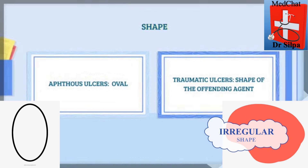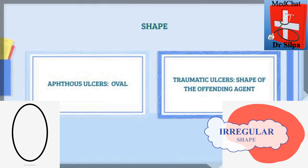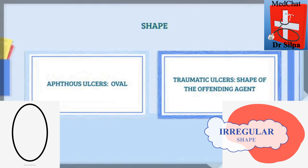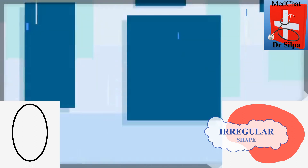Aphthous ulcers are oval or round in shape, whereas traumatic ulcers tend to take the shape of the offending agent.